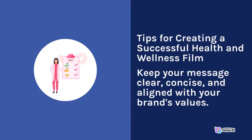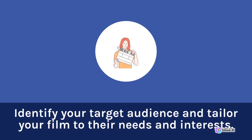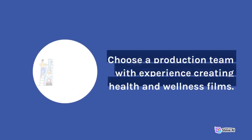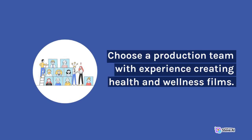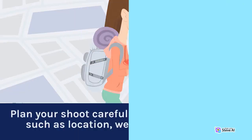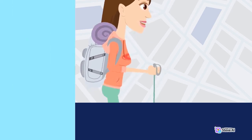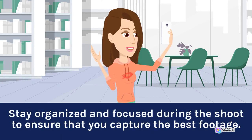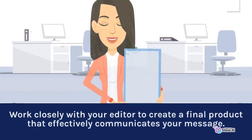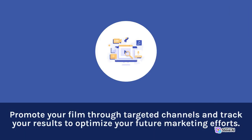Tips for creating a successful health and wellness film: Keep your message clear, concise, and aligned with your brand's values. Identify your target audience and tailor your film to their needs and interests. Choose a production team with experience creating health and wellness films. Develop a detailed script that is engaging and tailored to your target audience. Plan your shoot carefully, considering factors such as location, weather, and lighting. Stay organized and focused during the shoot to ensure that you capture the best footage. Work closely with your editor to create a final product that effectively communicates your message. Promote your film through targeted channels and track your results to optimize your future marketing efforts.